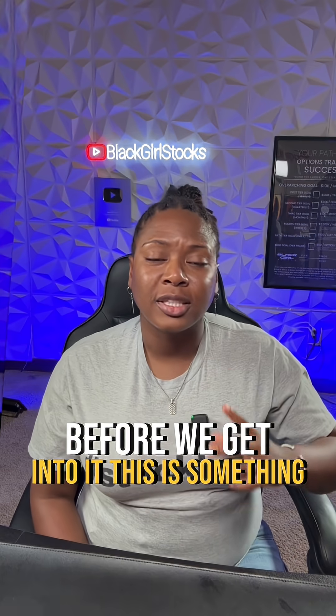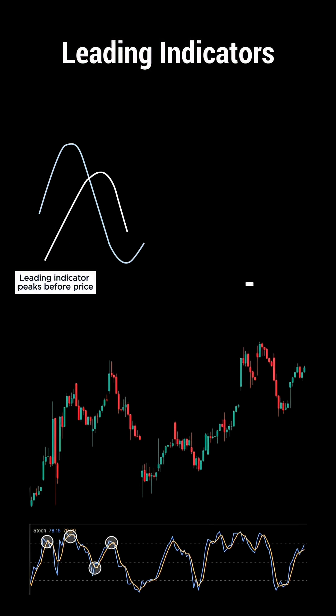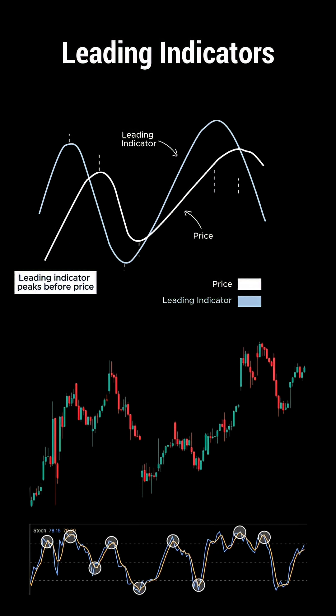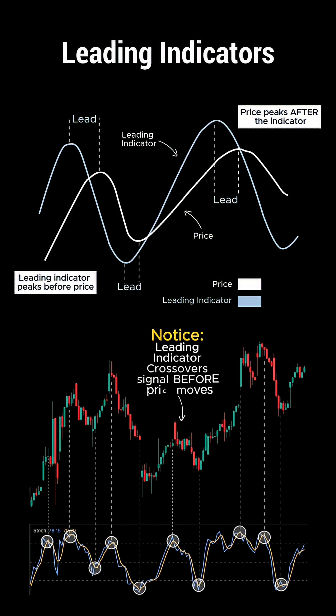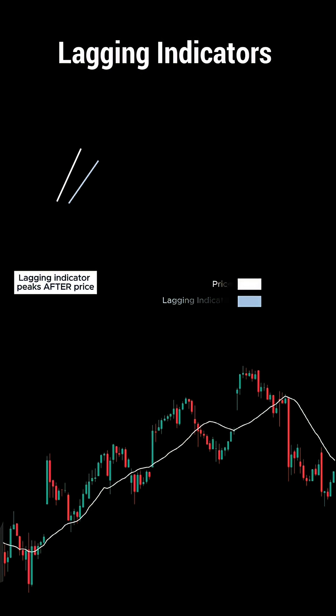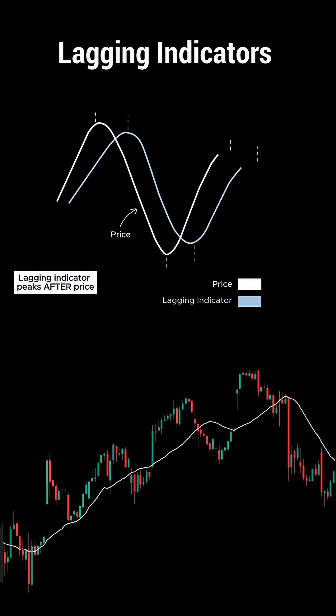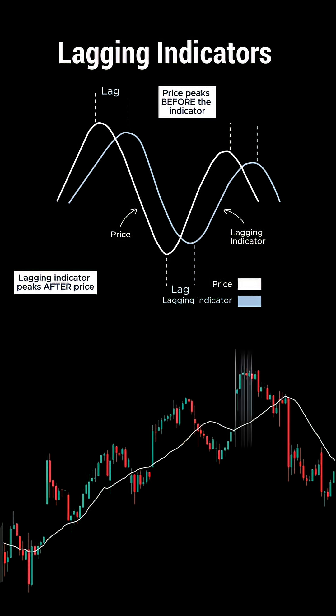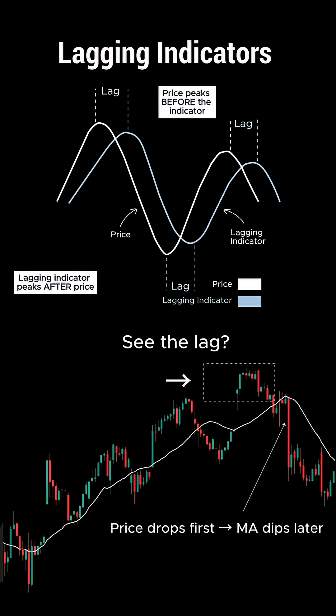Before we get into it, this is something you want to understand. Indicators primarily fall into two different camps: leading and lagging. Leading indicators are trying to predict where the price may go next, so they give signals before the move happens — think of leading indicators like predictors. Lagging indicators, on the other hand, pretty much just confirm what's already happening, giving signals after the move has already started — think of lagging indicators like historians.